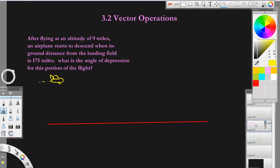And it says after flying at an altitude of nine miles. Okay, now you got to know what that is. That's this distance here. This altitude is nine miles. It says that it starts its descent when the landing field, here's the landing field here, is a hundred and seventy five miles away. Think about that.